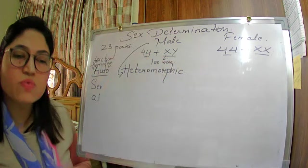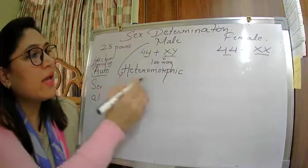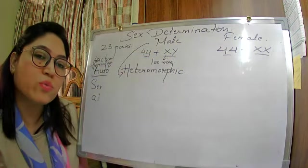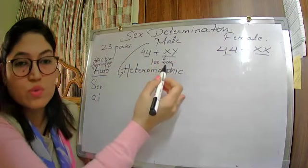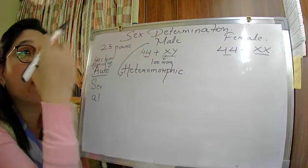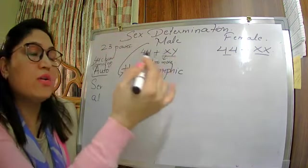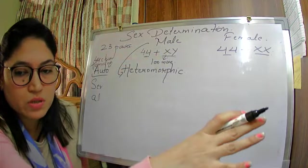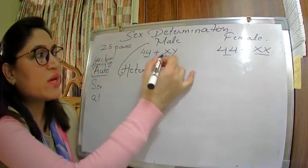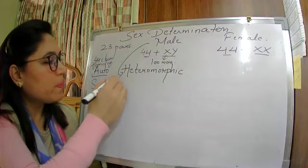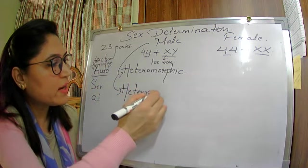The two sex chromosomes present in males are different in size and shape — that is why males are called heteromorphic. Since males have two types of sex chromosomes, they produce two types of sperms. So males are also called heterogametic.